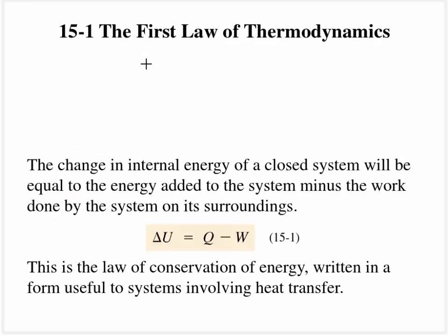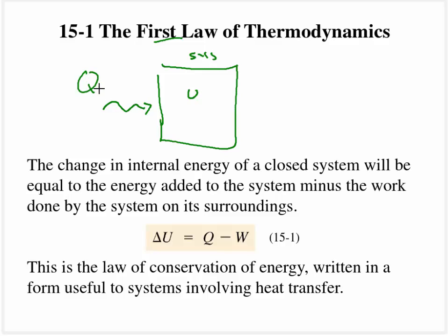The first law of thermodynamics is really just a conservation of energy type of law. Here I have my system and it has some internal energy associated with it. I can change that internal energy by either putting some heat into the system or the system can do work. So the change in internal energy, delta U, is going to be the energy that we add minus the work done by the system on the surroundings — just a conservation of energy.